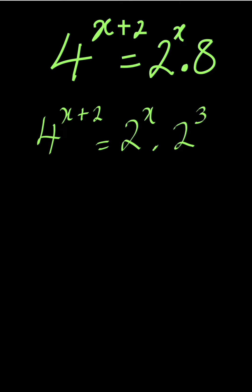To the left hand side we have 4. Remember that the 4 can be written as 2 power 2. Then you have your x plus 2. Everything equal to 2. In the right hand side we have 2 power x times 2 power 3.